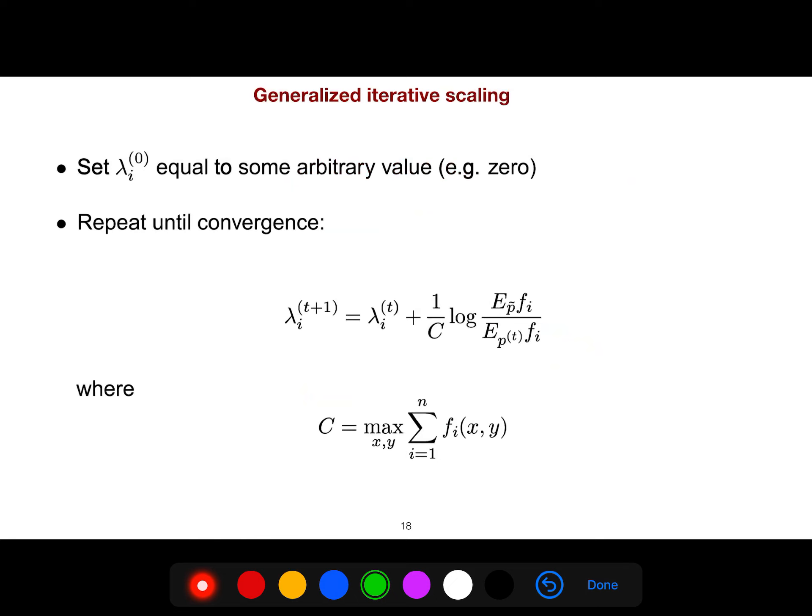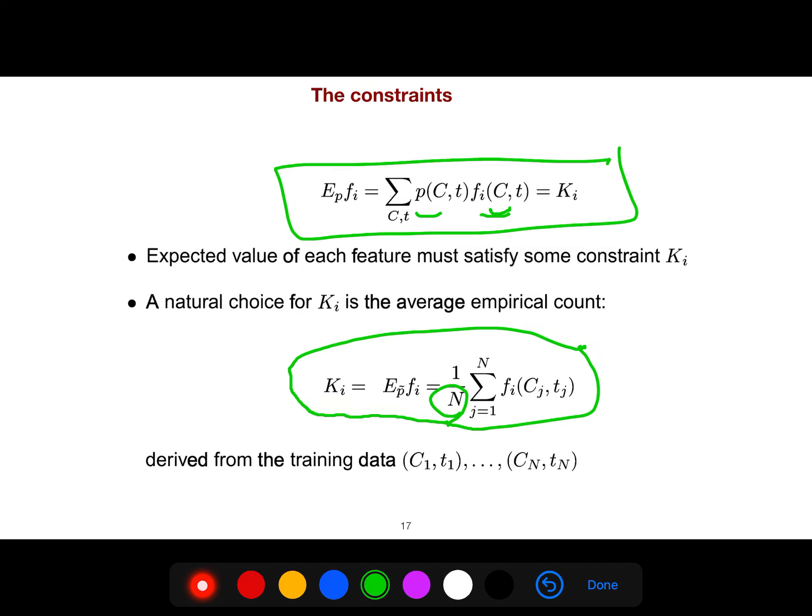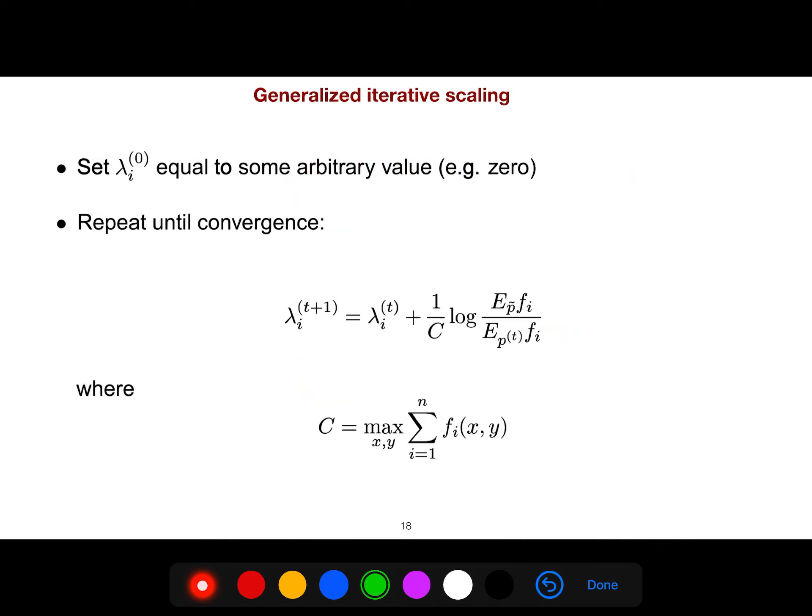And this is the generalized iterative scaling. As I said in the previous slide, I was saying that we have this expectation of f_i and we have the expectation f_i but with the empirical measure. So if this one is very, if the denominator is very close to the numerator what happens? This becomes 1. And what happens to the log? Log of 1 is 0. And what it means if this is 0? It means that it is converged. Your lambda_i, your weights are converged and you have fit the model using this generalized iterative scaling, this beautiful algorithm.